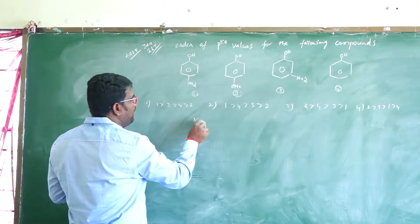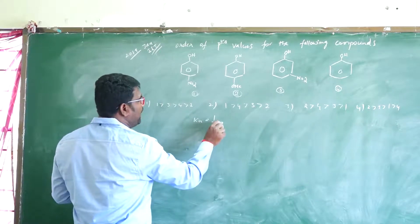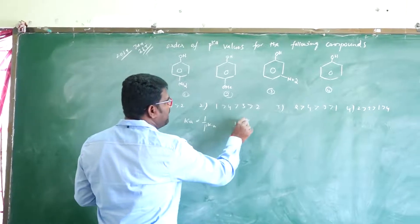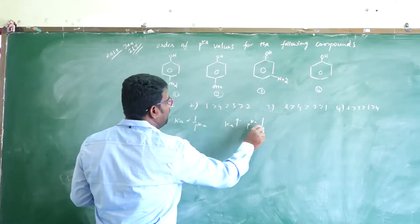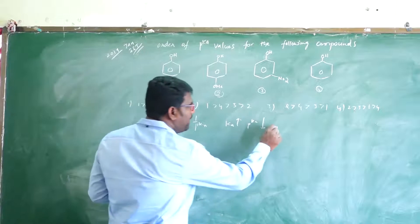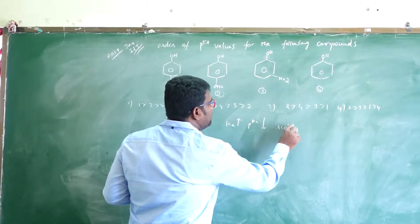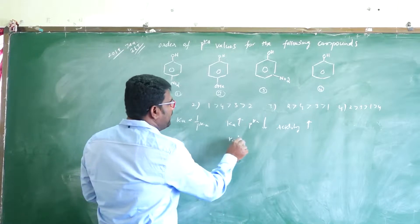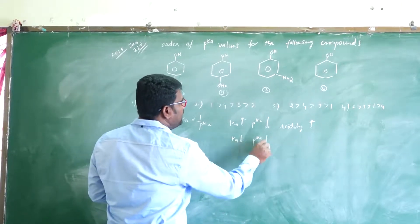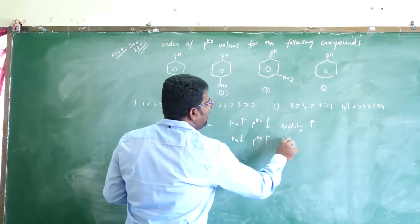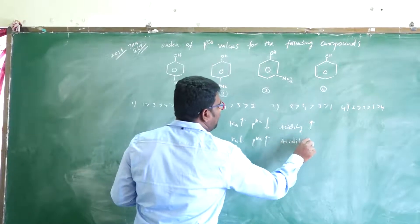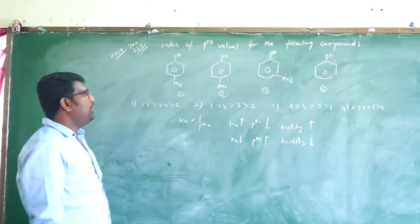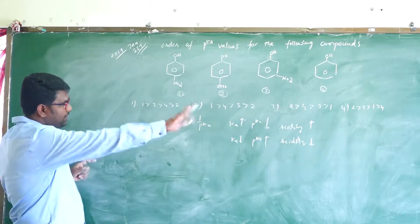KA is inversely proportional to PKA. So if KA increases, PKA value decreases, therefore acidity increases. If KA decreases, PKA value increases, meaning acidity decreases. So observe this as a decreasing order.